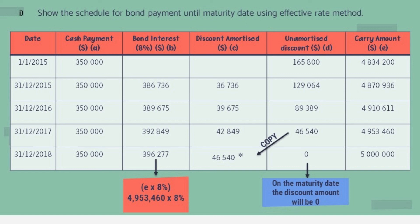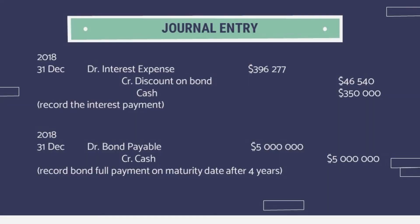The goal is for the carrying amount to reach $5,000,000 on the maturity date — the original bond face value with no remaining discount. For the journal entry at maturity, we record both the interest payment and the bond redemption. The interest entry is: debit Interest Expense, credit Discount on Bond, credit Cash. The bond redemption entry is: debit Bond Payable, credit Cash for $5,000,000 on 1st January 2018.